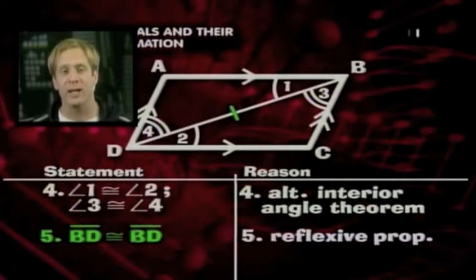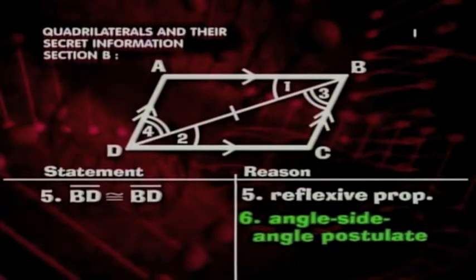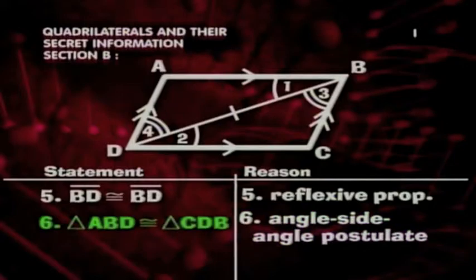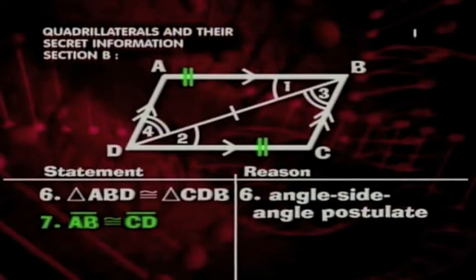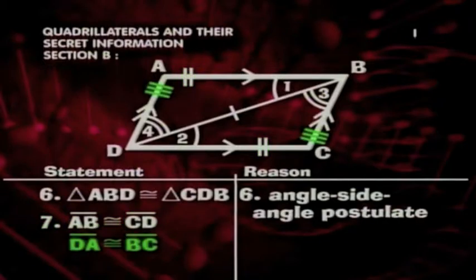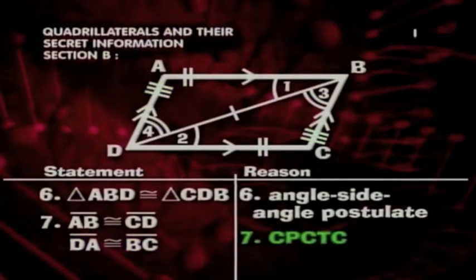Now we can use the angle-side angle postulate to say that triangle ABD is congruent to triangle CDB. Since the two triangles are congruent, we can state in our seventh step that AB is congruent to CD, and DA is congruent to BC. Why? Because of CPCTC. Corresponding parts of congruent triangles are congruent.